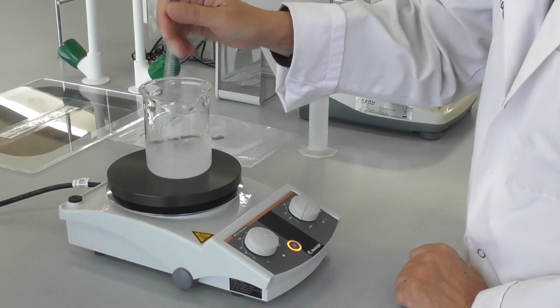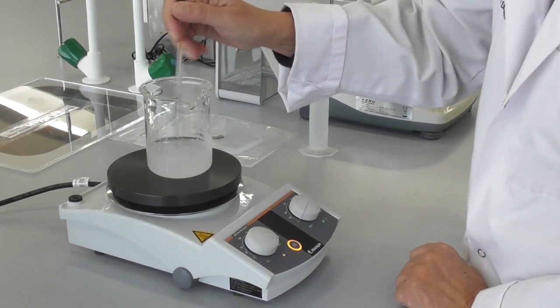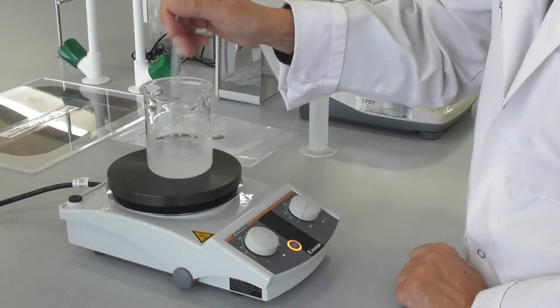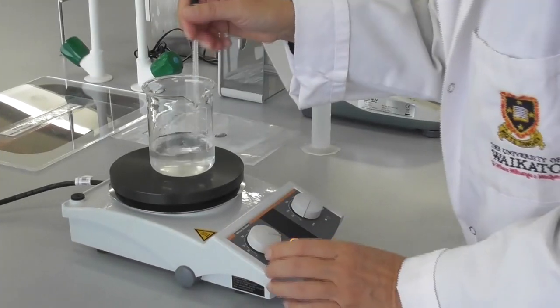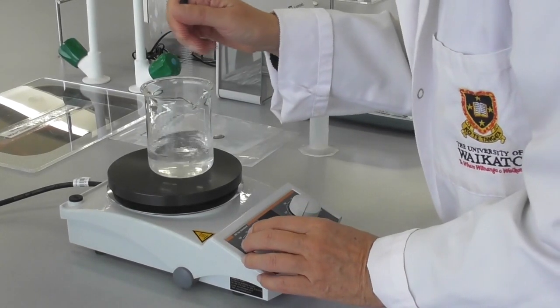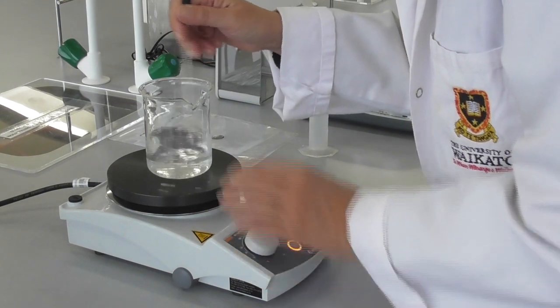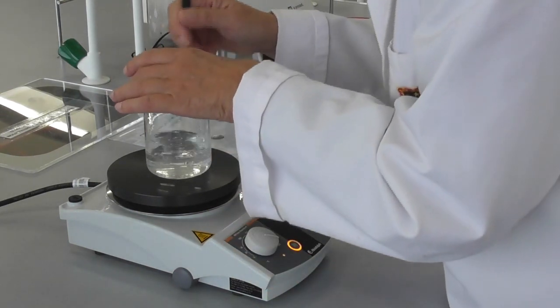Gradually, the solution becomes clear. When it's hot, all the acetate will be dissolved. Then we can take the beaker off the hot plate.